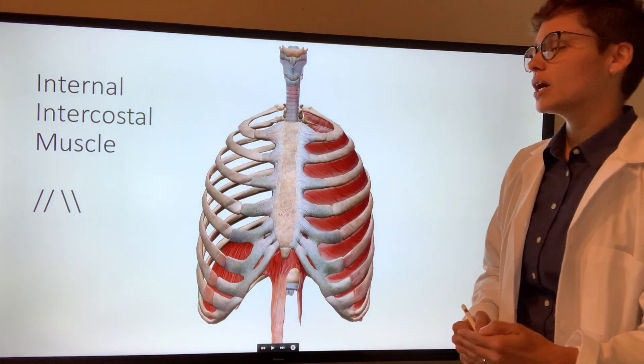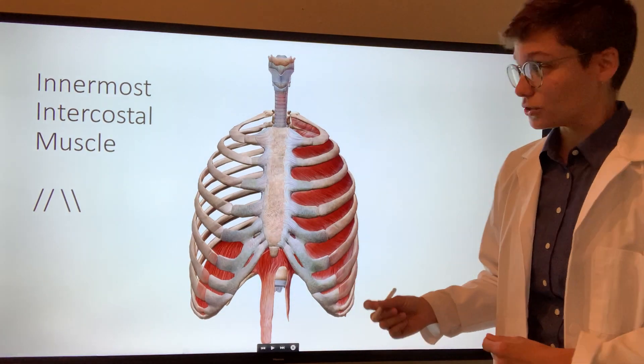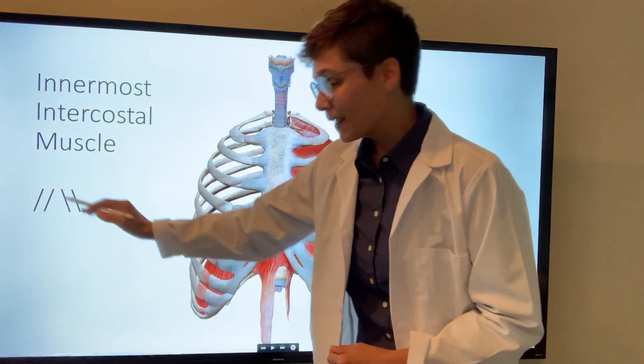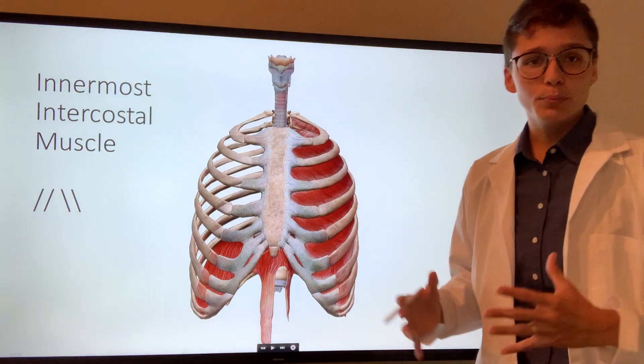Next, we'll see our internal intercostal muscle, and then finally our innermost intercostal muscle, whose fibers run like so and aid in expiration by depressing the ribs.